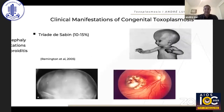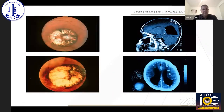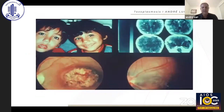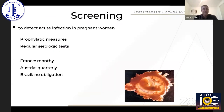Here are the clinical manifestations of congenital toxoplasmosis — the Sabin triad: hydrocephalus, calcification, and retinochoroiditis. This is a typical lesion in the macular area, and it's really devastating to see this kind of involvement in the central nervous system and in the macula of both eyes. These are siblings with congenital toxoplasmosis.